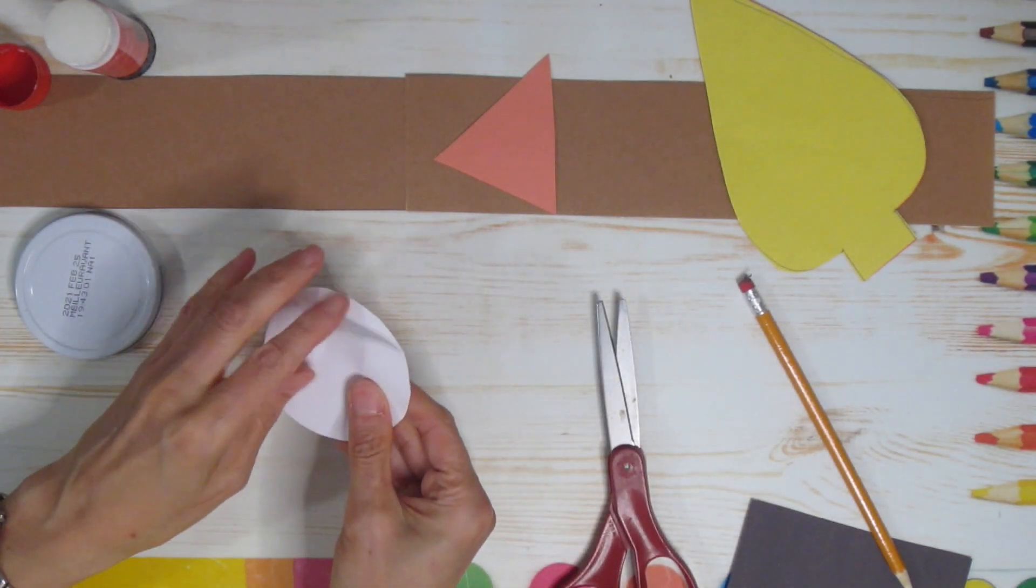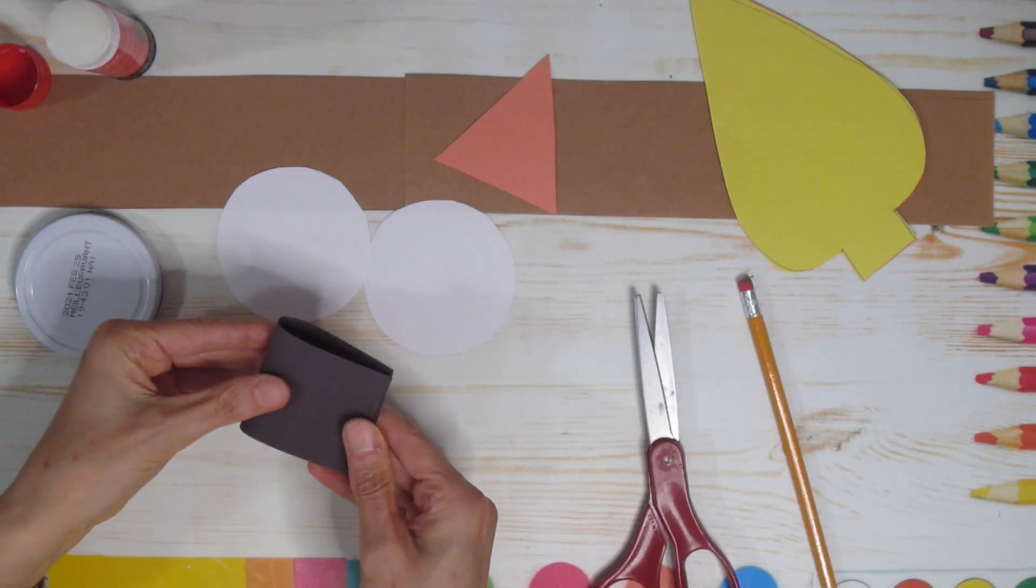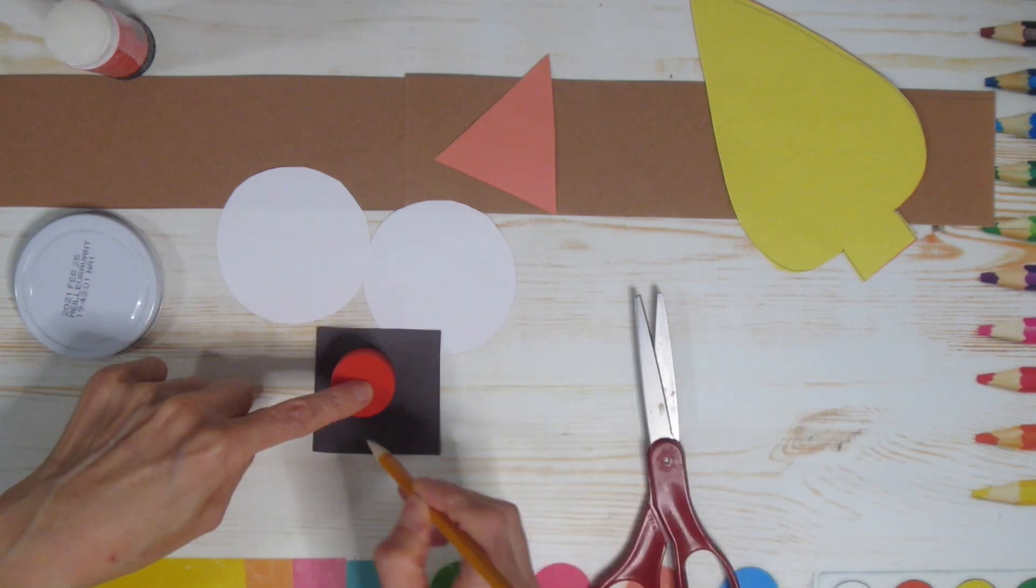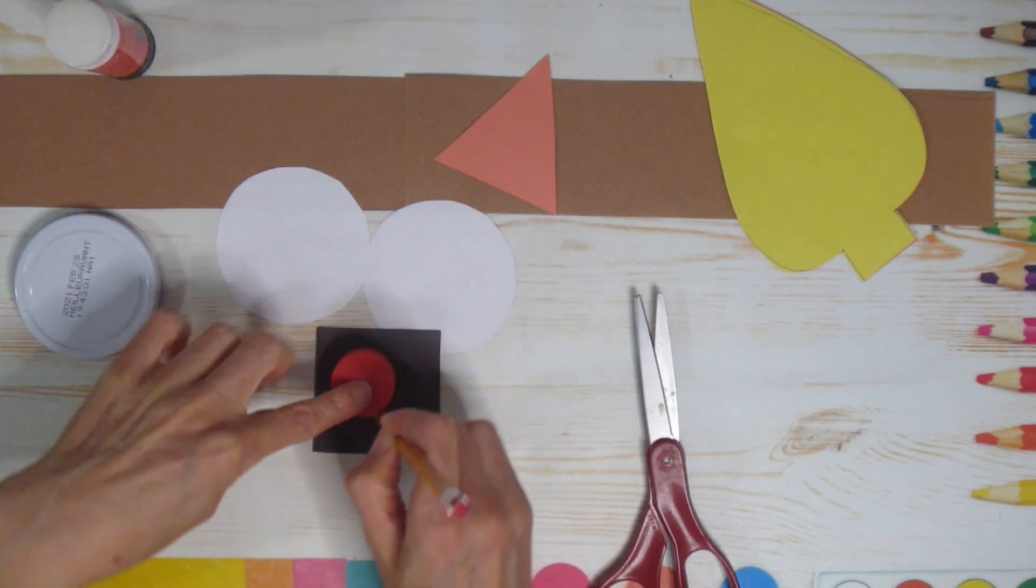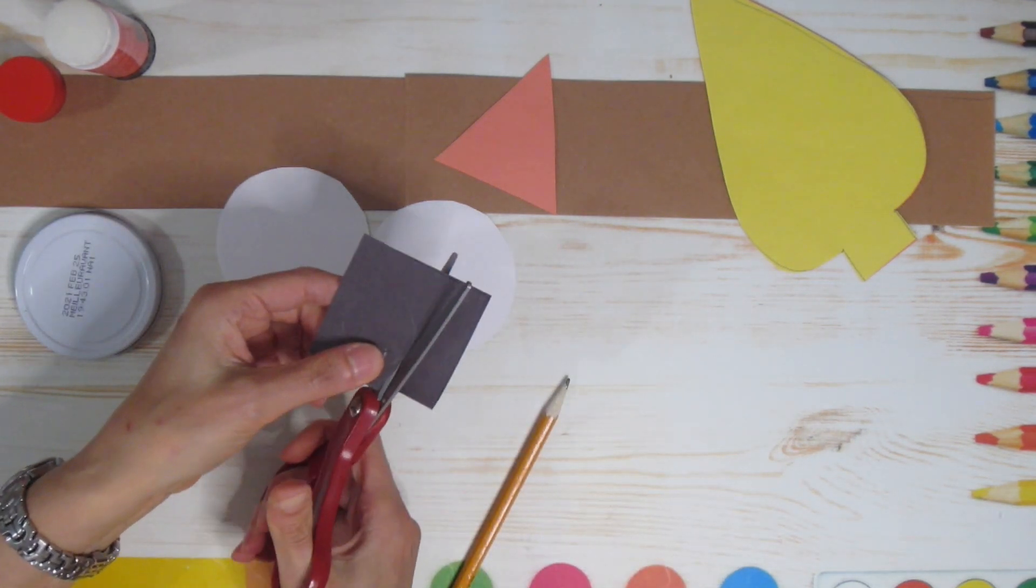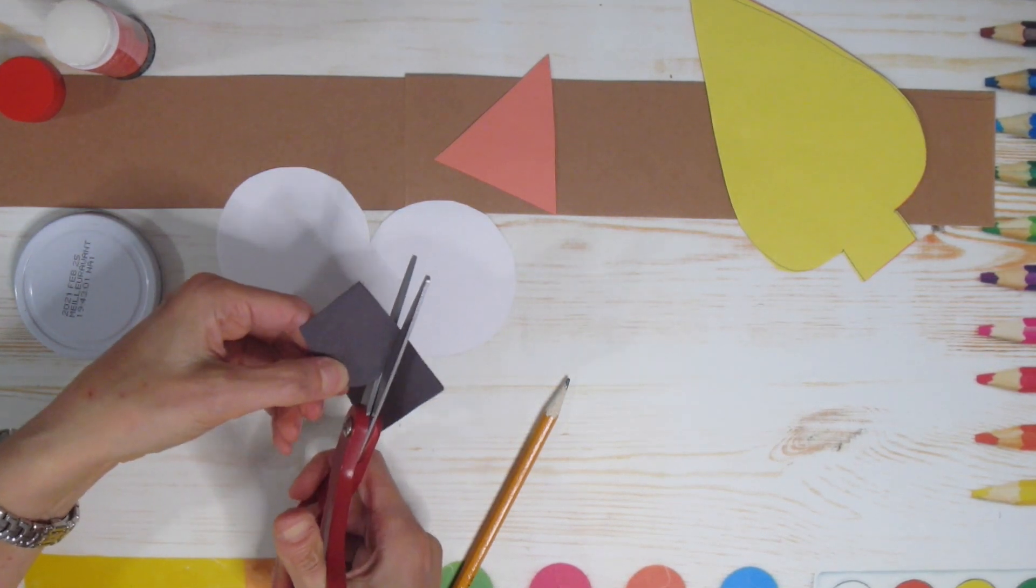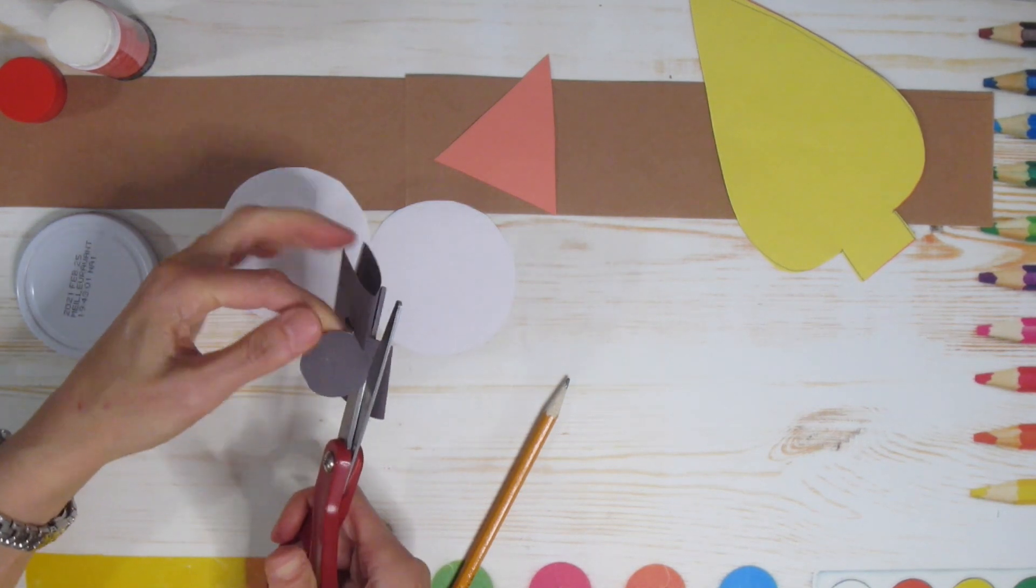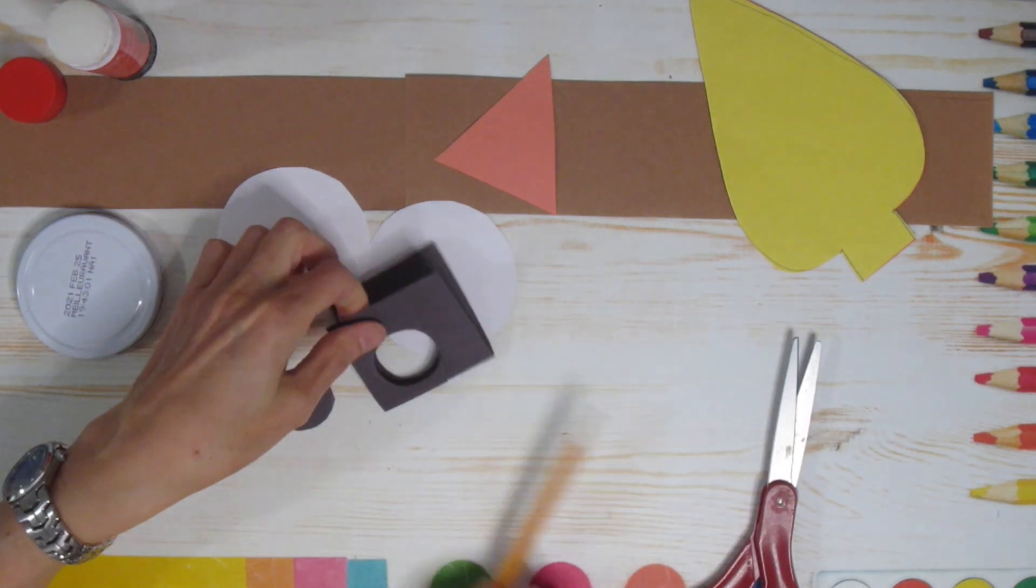Once I have those two, I'm going to do the same thing with my black piece of paper, but I want a smaller circle because I'm going to use two little pupils in the middle. I find my lid for my glue works perfectly, so I'm just going to use that as my tracer. If you don't have that, just draw a circle, cut it out, and remember you need two.